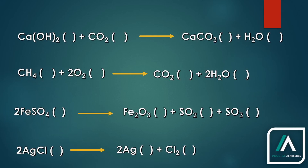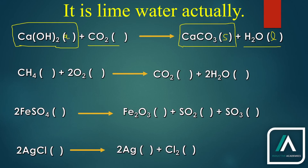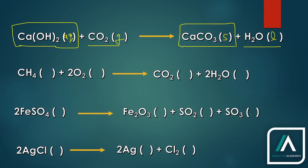Now let's see how much you can understand. First example: calcium hydroxide plus carbon dioxide gives calcium carbonate and water. Calcium carbonate is an example of a water-insoluble salt, so it is going to be solid. Water is liquid. Calcium hydroxide is slaked lime and it is in aqueous form. Carbon dioxide is going to be gaseous.